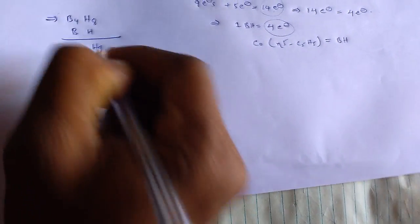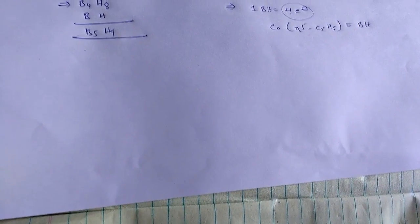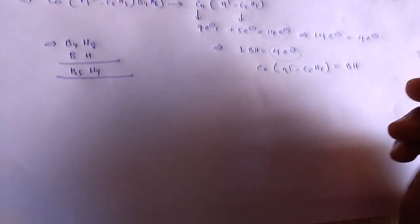From this, H9 and B5. H9 B5. And already, from the Wade's rules.